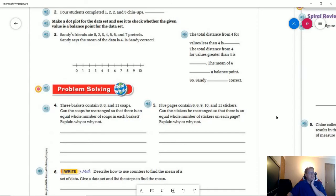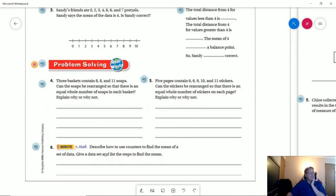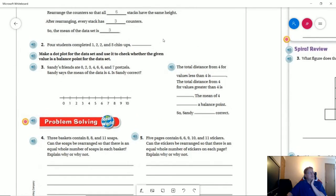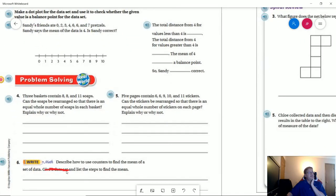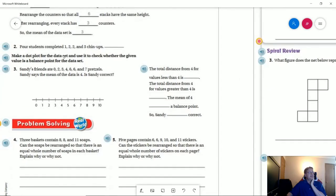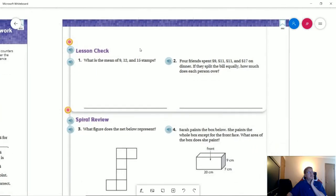For number six, describe how to use counters to find the mean of a set of data. You don't have to do this part. Just tell me how you would use them and the steps that you would use. You're going to do that to find the answer for number two. Don't worry about coming up with an individual data set. You could just use the data set from number two for the purposes of answering that question.